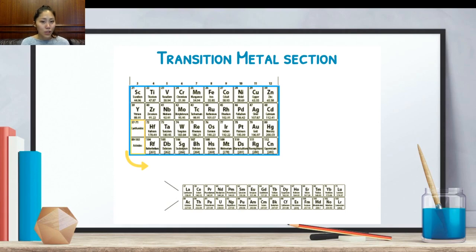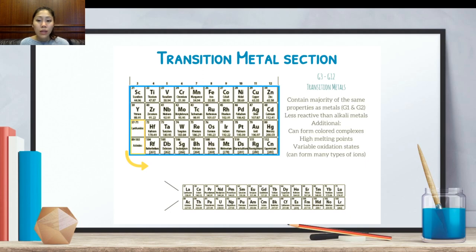The transition metal section, we're going to bring that back now. And transition metal runs from group 3 through group 12 on the extended periodic table. They contain majority of the same properties as metals. However, they are less reactive than alkali metals. Additional things to remember is that they could form colored complexes. They have high melting points. They have variable oxidation states. And all of this will be covered in another video linked above.